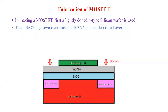Then SiO₂ is grown over this, and then Si₃N₄ film is deposited over this. So you can see SiO₂ and Si₃N₄ are deposited on this. These are the second steps.